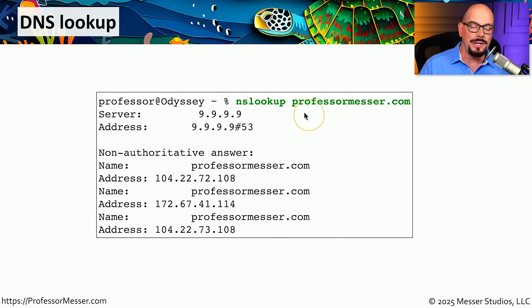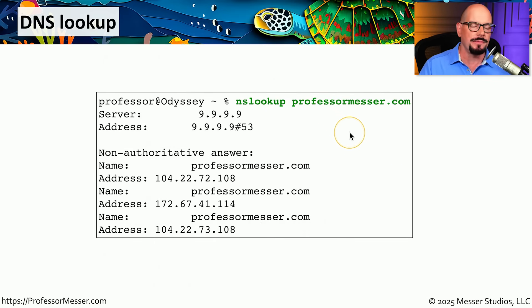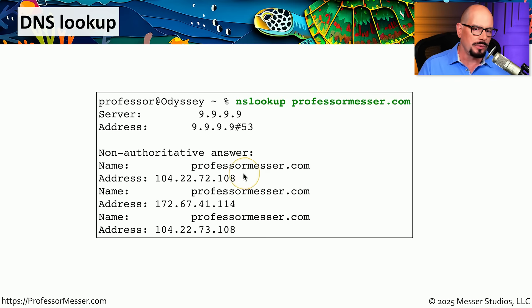The reason we get three separate IP addresses in the results is that we have created a redundant series of web servers so that if one IP address is suddenly not available, you can use any of the remaining IP addresses to communicate to our web server. If you're on Windows, you can use the nslookup command to provide the same information — nslookup of professormesser.com will return the same answers with the same three IP addresses.